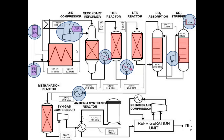Now the process gas — mainly hydrogen and nitrogen, with traces of methane and argon — is ready for ammonia synthesis. The gas is first compressed to the required process pressure, then heated up to the required temperature in an inlet-effluent heat exchanger, where the gas outlet of the ammonia synthesis converter heats up the gas inlet. In the ammonia synthesis converter, nitrogen reacts with hydrogen to produce ammonia, as we mentioned in the previous video. This is the core of the process — this is where our product ammonia is produced in the ammonia synthesis reactor.